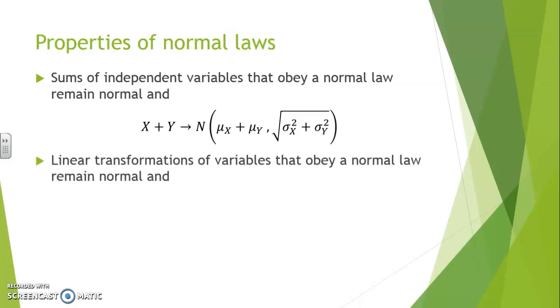If we apply a linear transformation to a variable that was normal, then the resulting variable will also be normally distributed. So if X is a normal variable, aX plus b will also be normally distributed.